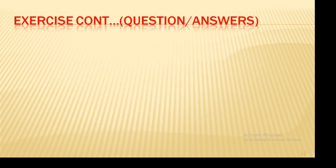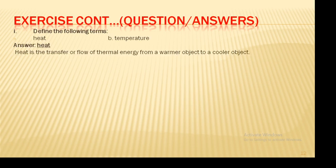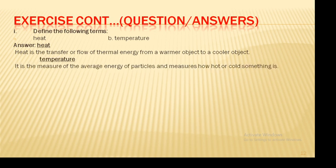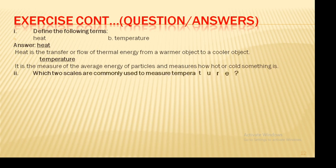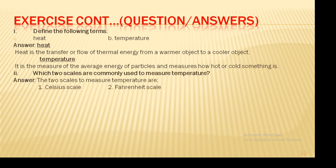Now here come the question and answers of this unit. Open your book, page number 81. Question number 1: Define the following terms — heat and temperature. Answer: Heat is the transfer or flow of thermal energy from a warmer object to a cooler object. Temperature is the measure of the average energy of particles and measures how hot or cold something is. Question number 2: Which two scales are commonly used to measure temperature? Answer: The two scales used to measure temperature are the Celsius scale and the Fahrenheit scale.